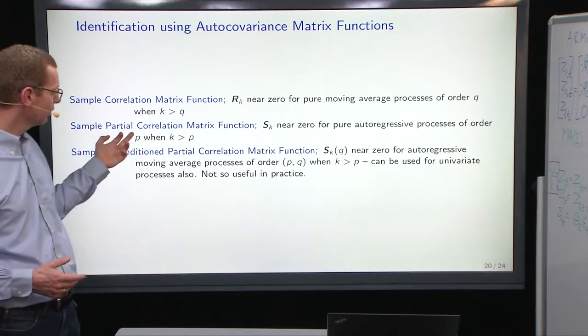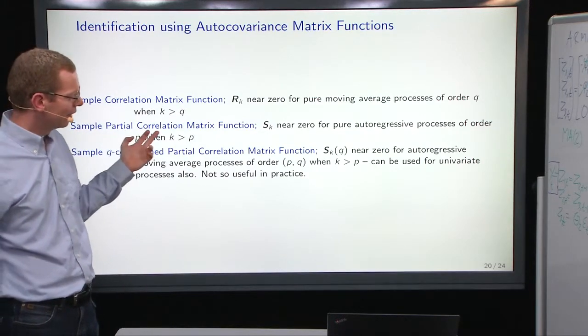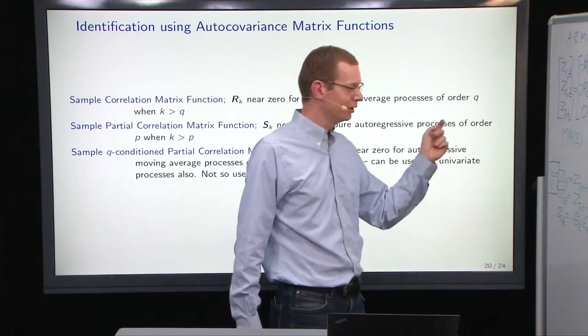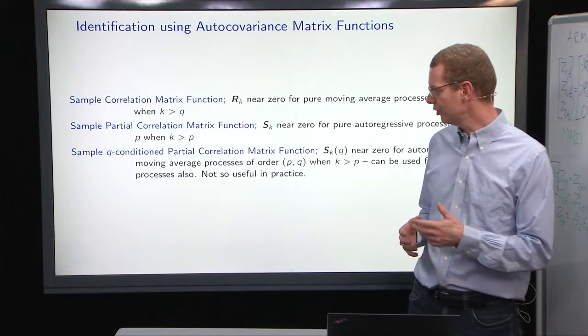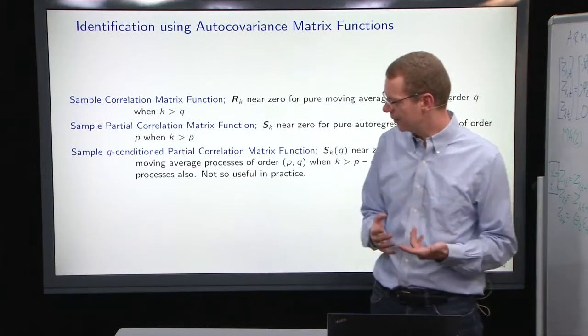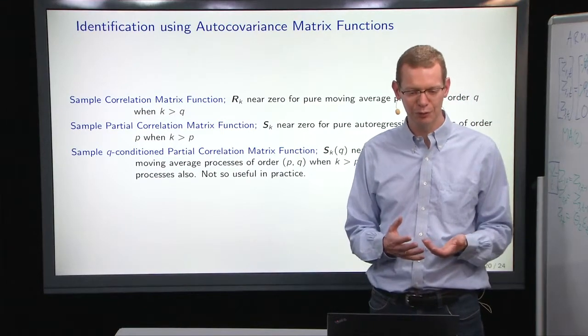Likewise, if you look at the partial correlation matrix function, then those estimates will be near zero for a pure autoregressive model when you get to lag k greater than the order p. So that's the same thing as before.